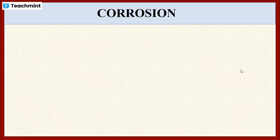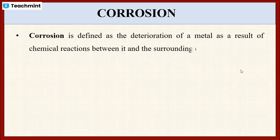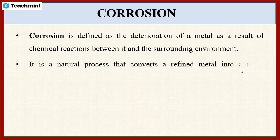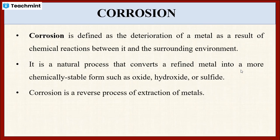Hence, corrosion is defined as the destruction or the deterioration of a metal as a result of chemical reaction between the metal and the surrounding environment. Corrosion is a natural process that converts a refined metal into a more chemically stable form such as oxides, hydroxide or sulfides. Thus, we can say corrosion is a reverse process of extraction of metals.